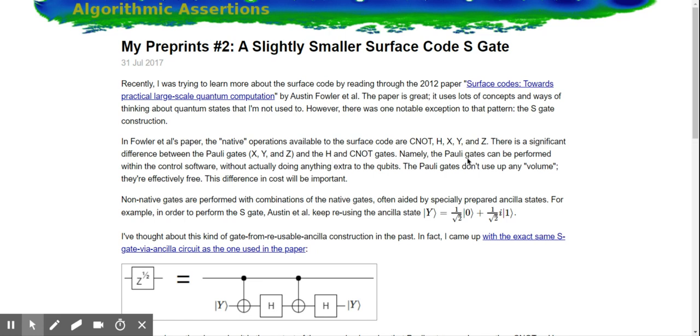The native operations available to the surface code are CNOT, H, X, Y and Z. There is a significant difference between the Pauli gates XYZ and the H and CNOT gates. The Pauli gates can be performed within the control software without actually doing anything extra to the qubits. They are effectively free.